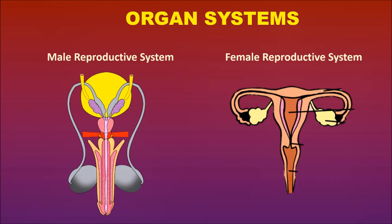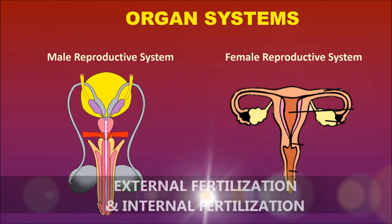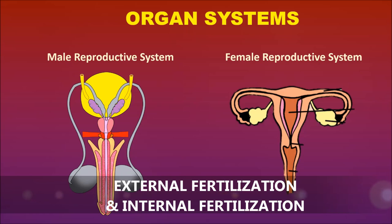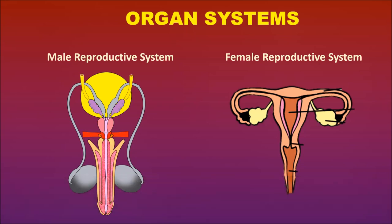On the basis of the location of fertilization, organisms are divided into two types: external fertilization and internal fertilization. If the fertilization occurs inside the body, it is known as internal fertilization. Whereas if the fertilization occurs outside the body, that is known as external fertilization.